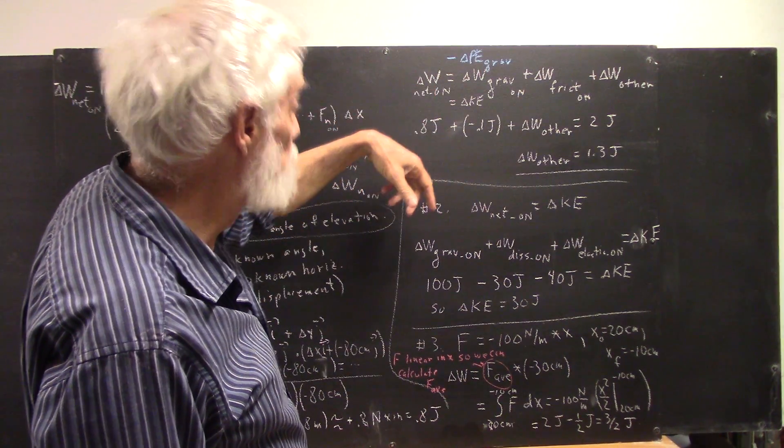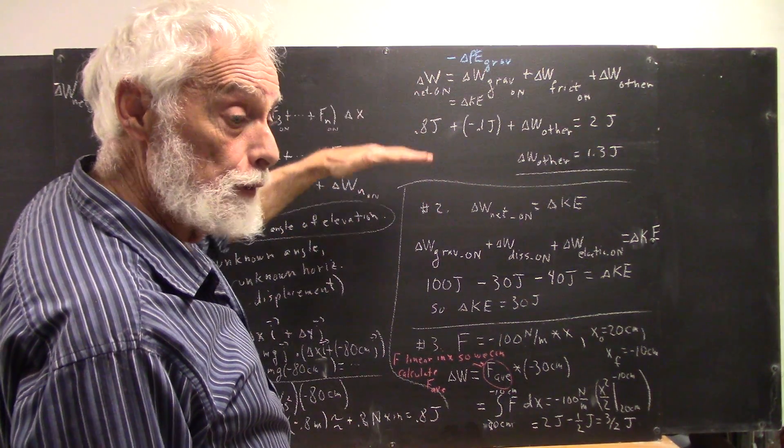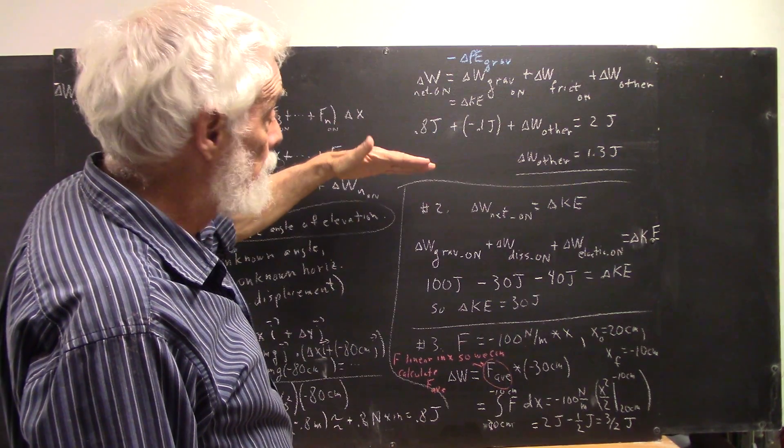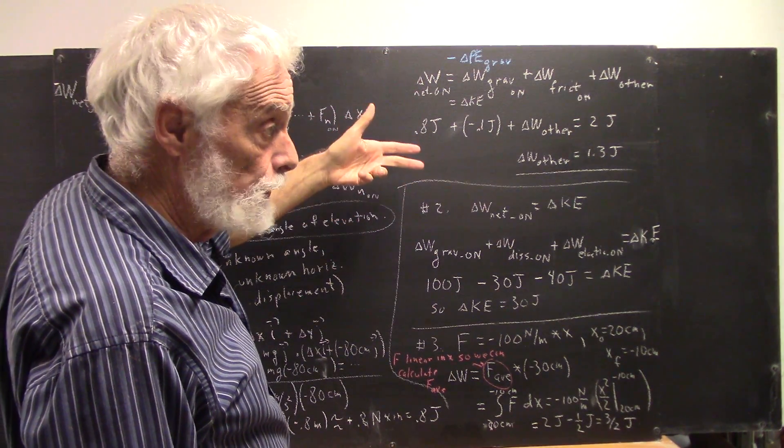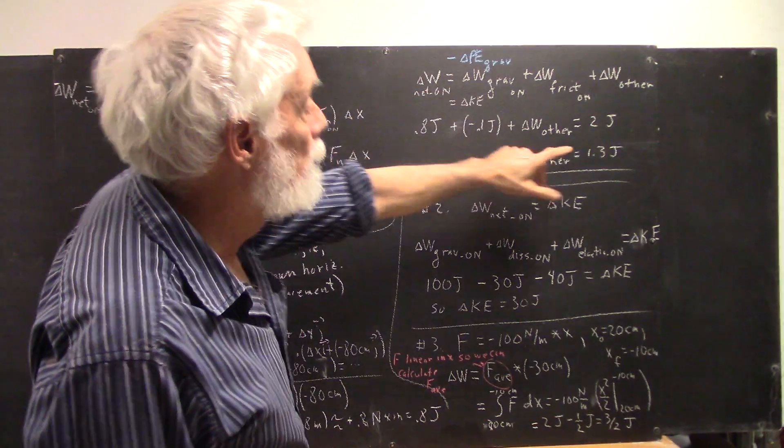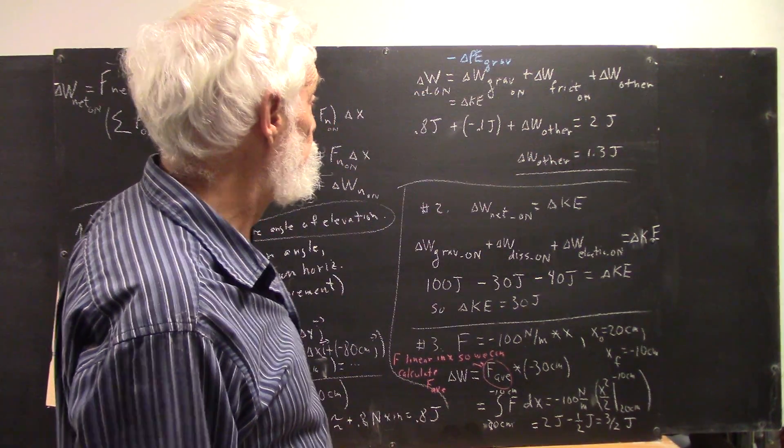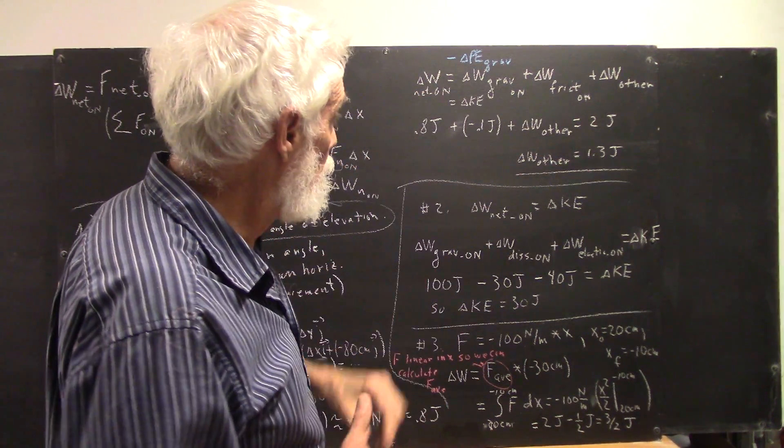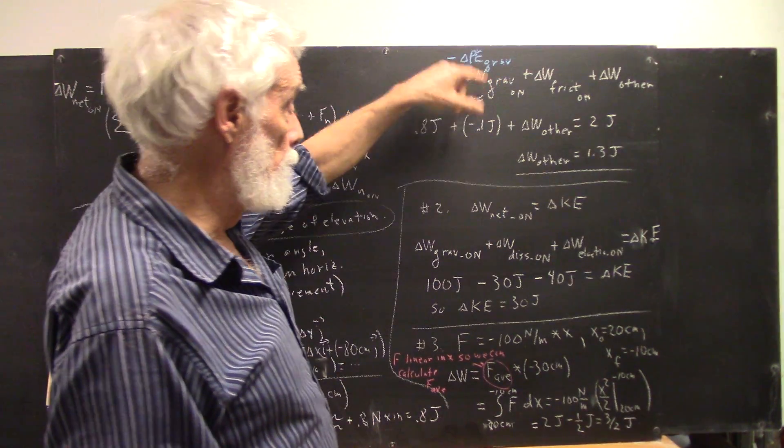You can think of this as potential energy decreasing. When potential energy decreases, the energy has to go somewhere - it goes into the kinetic energy of the object. We're going to do a lot more with this, but it's something you need to see right now.